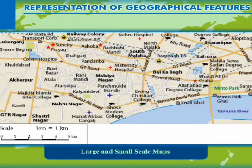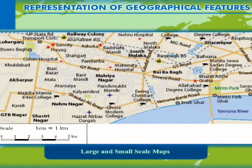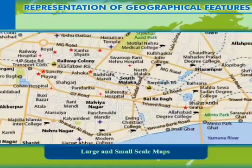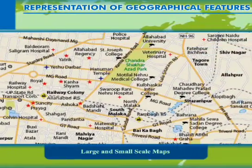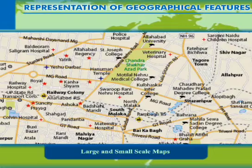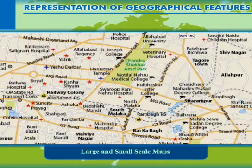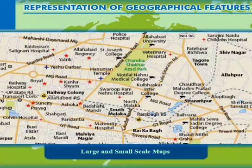On the other hand, a city map with a scale of 1 cm equal to 1 km shows a locality and colony with detailed information like roads, schools, hospitals, etc. Such maps are called large-scale maps.